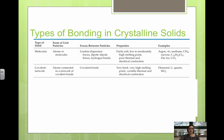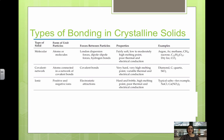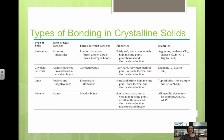Looking at types of bonding, there's a table showing the form of particles, forces between them, properties, and examples for each type. Each of the following videos will go into these in much more detail, but this summary table covering molecular, covalent network, ionic, and metallic bonding in crystalline solids would be useful to have in your notes.